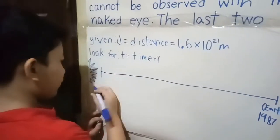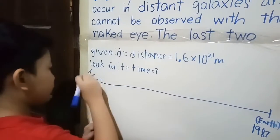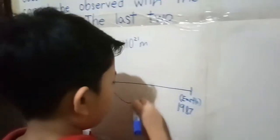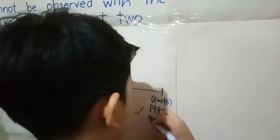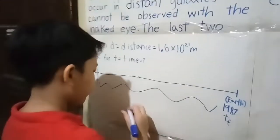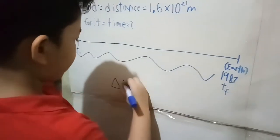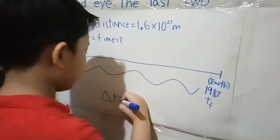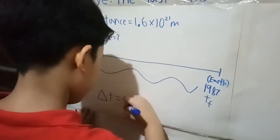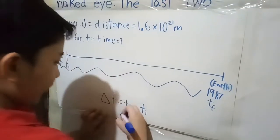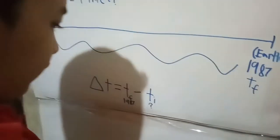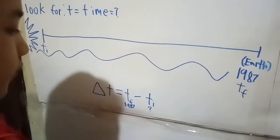This one is called initial time, T.I., the time of explosion of the star. Here is the final time, T.F., when the light from the supernova reached Earth in 1987. We are not just looking for any time, we are looking for delta time, which is normally calculated by subtracting the initial time from the final time. The final time is 1987, but the initial time is unknown, so we cannot calculate delta time by using this equation.